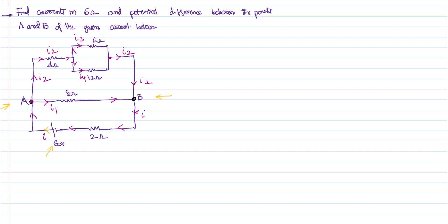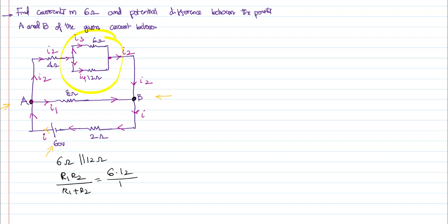Before coming to points A and B, let us understand the other parts of the problem. If you look carefully, the 6 ohm and 12 ohm resistors are in parallel. When resistors are in parallel, the effective resistance is R1R2 divided by R1 plus R2. That gives us 6 into 12 divided by 6 plus 12, which is 72 over 18, equal to 4 ohms.